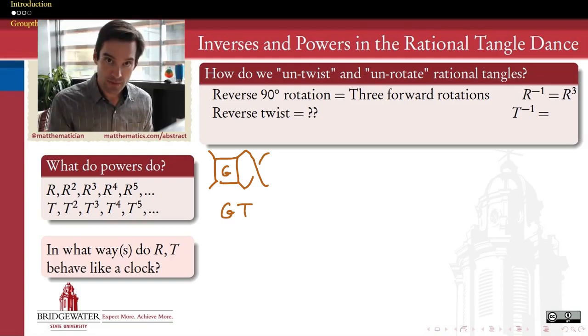So the element R in the rational tangle dance is straightforward to reverse. Its inverse is equal to its own cube. But the interesting question, even more interesting question,